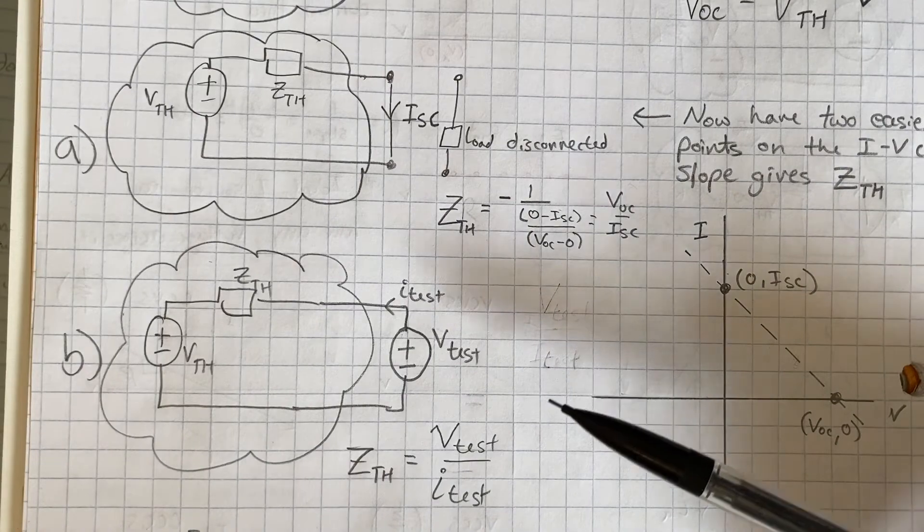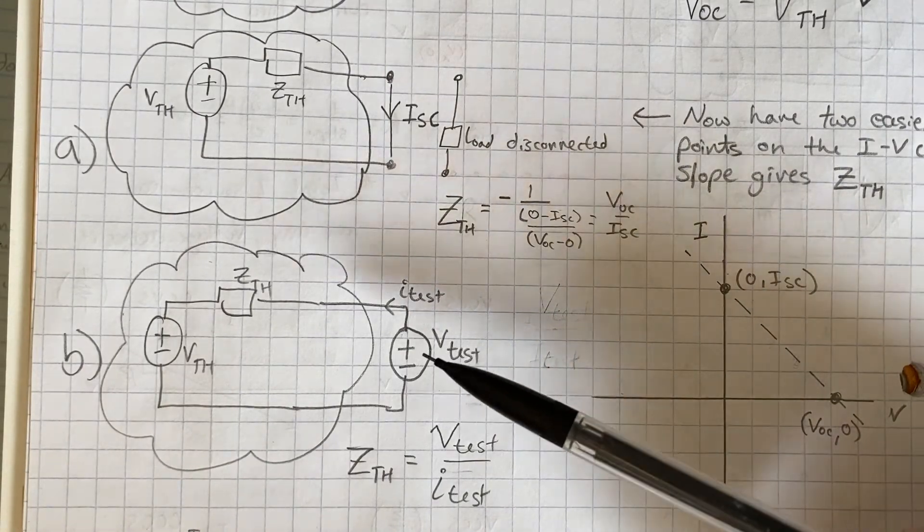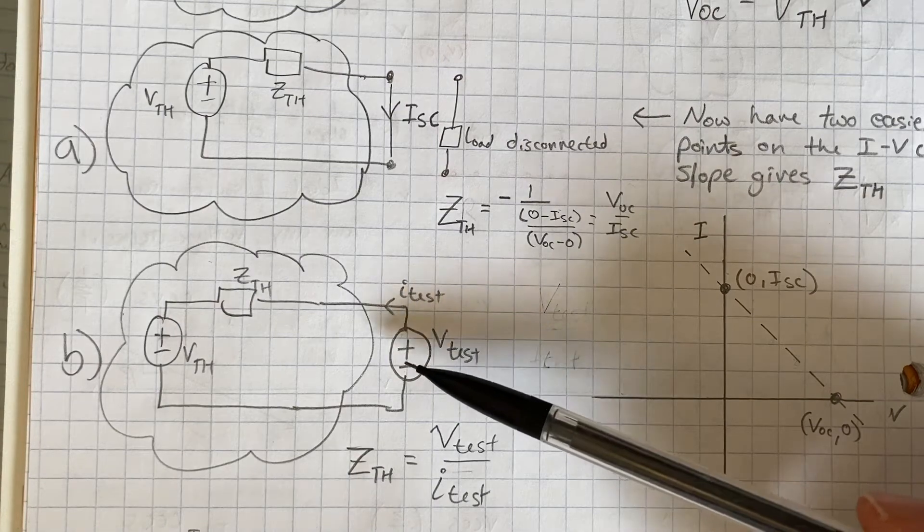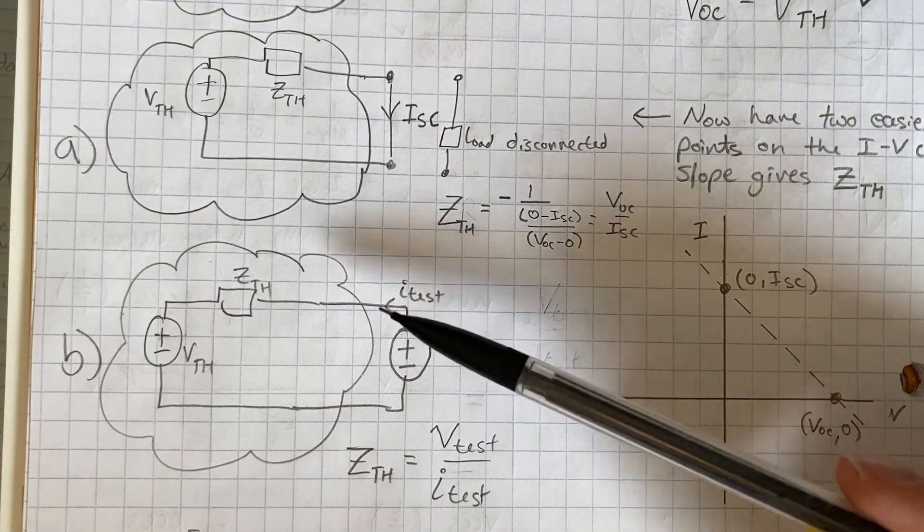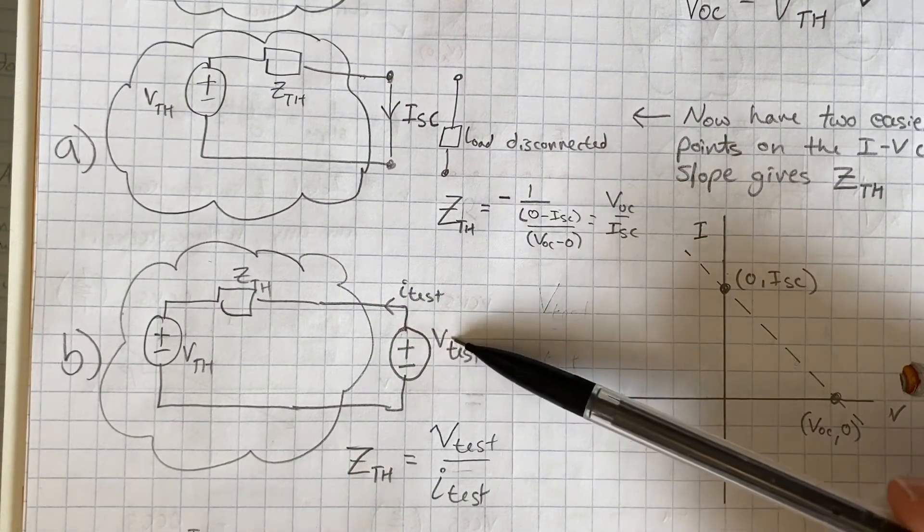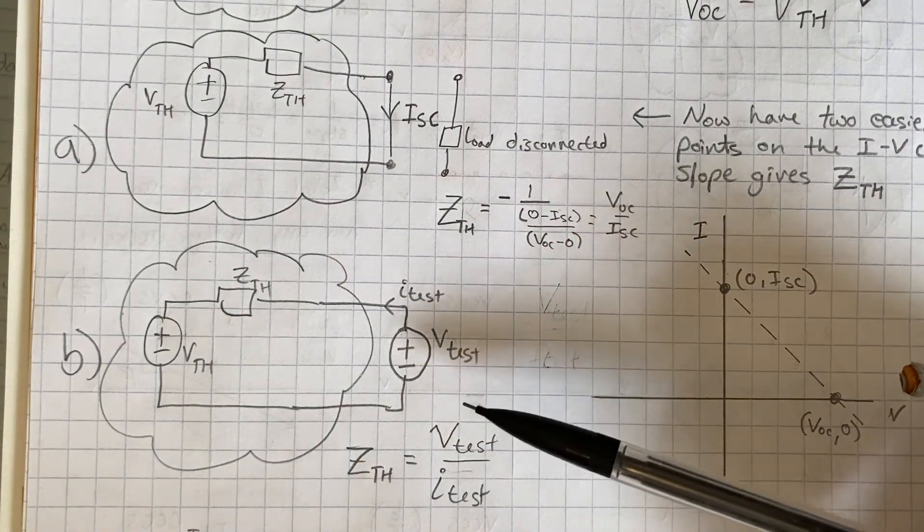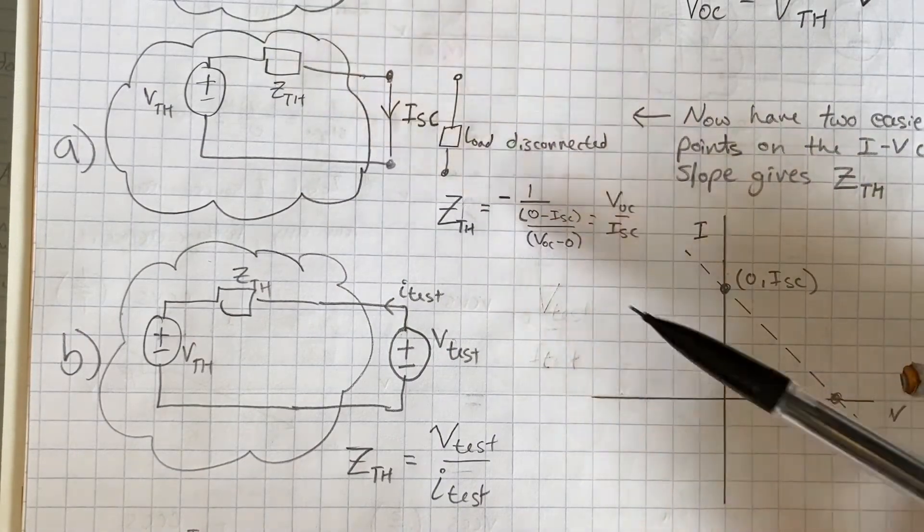Another way is we could just put a test source in this. So we're using a voltage source and find the voltage of the test source over the current that gets drawn from it, which is really doing the same thing as this.